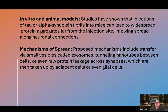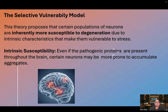Proposed mechanisms of spread include transfer via small vesicles called exosomes, tunneling nanotubes between cells, or even raw protein leakage across the synapses, which are then taken up by adjacent cells or even glial cells.